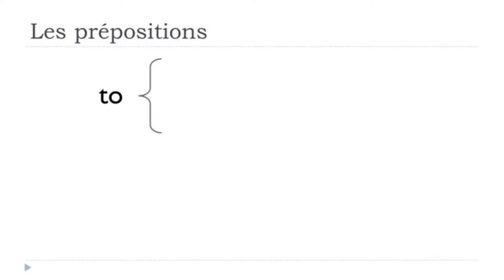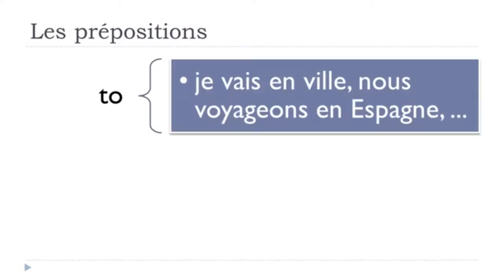La préposition 'en' can be used to express the 'to' concept in English. For instance, 'je vais en ville' — 'aller' is to go and 'ville' is town, so 'je vais en ville' means I'm going to town. Or 'nous voyageons en Espagne' — 'voyager' is to travel, and Espagne is Spain. So in many cases, to express this 'to' concept in English, we'll use the preposition 'en'.